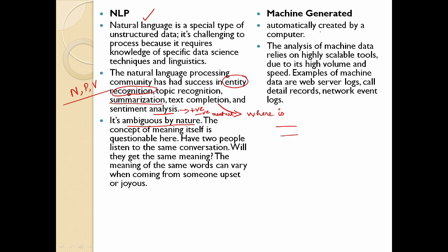Machine Generated — the computer generates it. The advantage of Machine Generated data is that it is Highly Scalable. Scalable means you generate a large volume of code or data quickly. Examples include web server logs — logs are always available — and call detail records. All of these are machine-generated. The records are stored automatically.